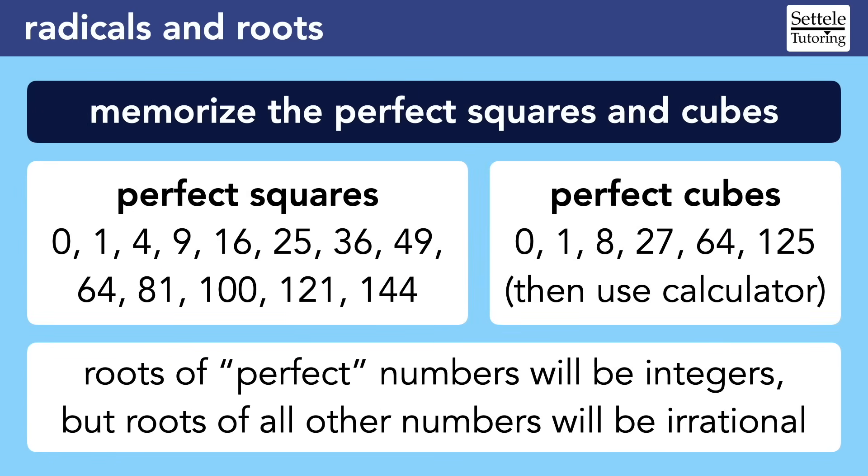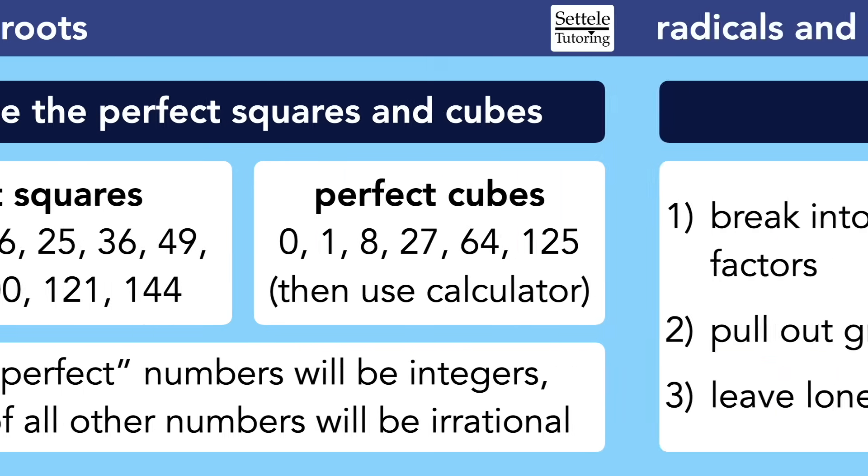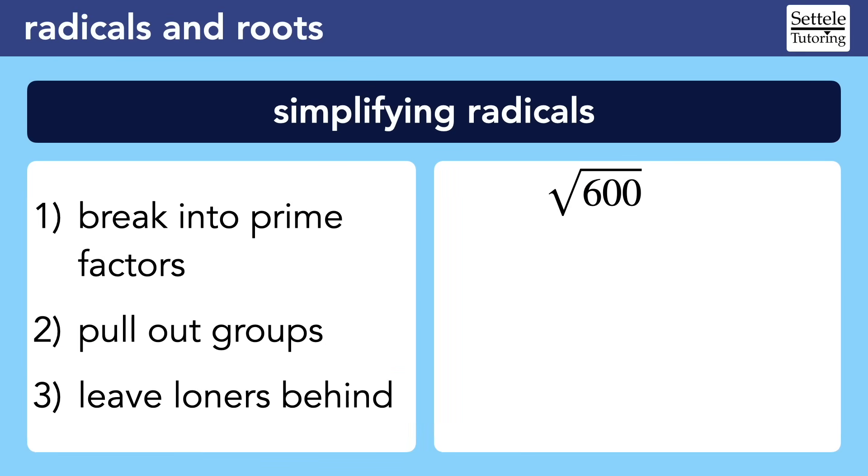Radicals are much easier to work with if we memorize the most common perfect squares and perfect cubes. When we take the root of perfect numbers, we get nice simple integers. Every other number will produce irrational numbers, which are messy, never-ending decimals. A lot of questions involving radicals and exponents are incredibly easy if you can quickly recognize that 25 and 49 are special numbers. Simplifying radicals is easier if you know the perfect numbers too, but it's not absolutely necessary.